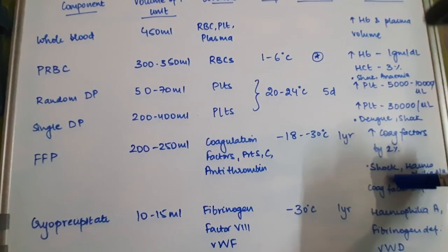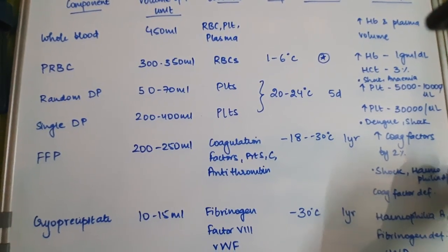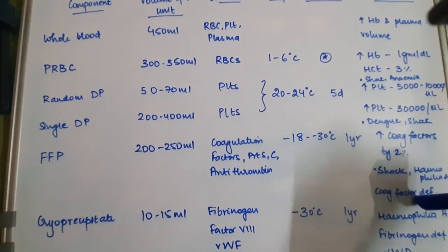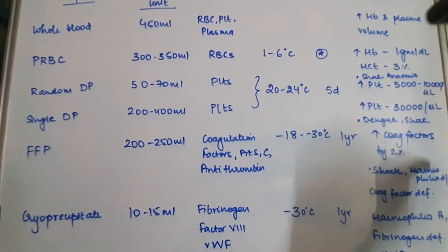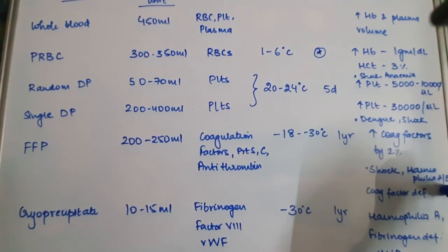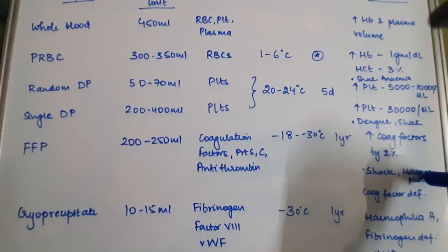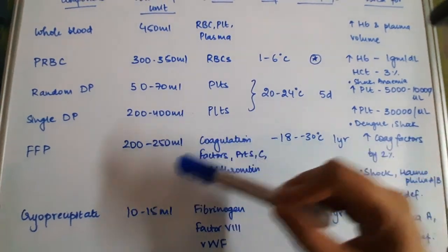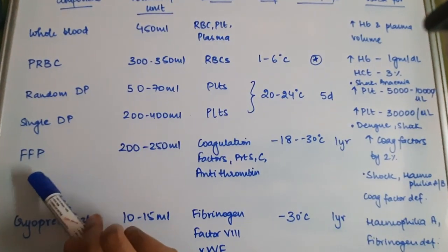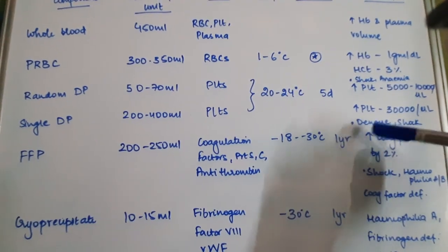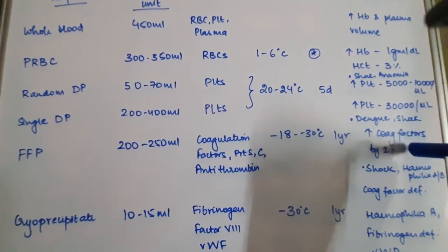It is used for conditions like shock. It is also used for coagulation factor deficiency and conditions like hemophilia A and B. Transfusion of one packet of fresh frozen plasma will increase coagulation factors by 2%.